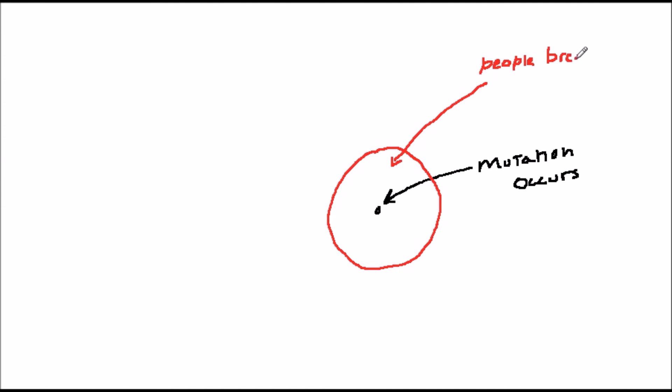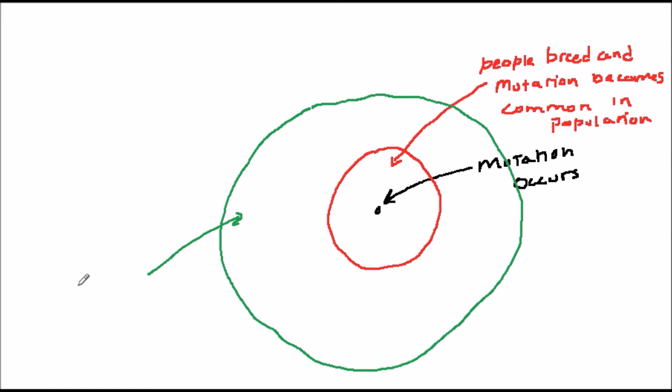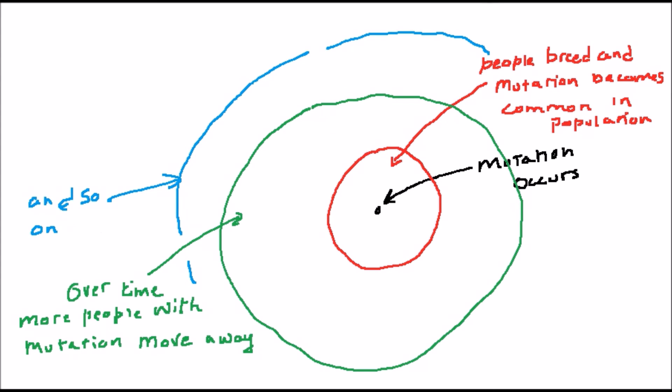If a mutation occurs in a person in a particular geographical location, then it might become common in the population as people with it reproduce. As people with a particular mutation move away over time from its place of origin, we can see a pattern emerging of a concentration. I've illustrated this in the diagram. Parts of the population may pick up other mutations, allowing us to trace a history of that particular population.